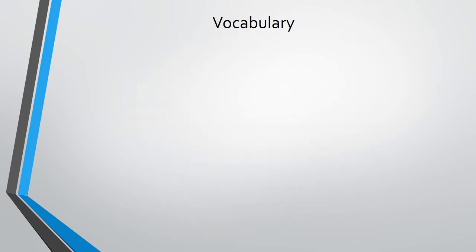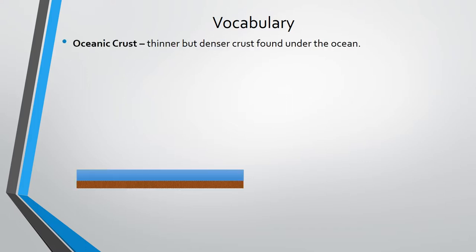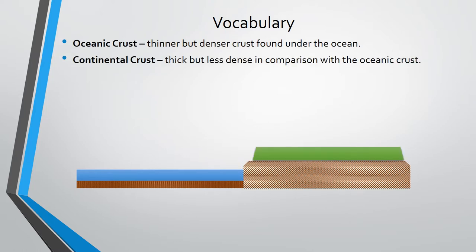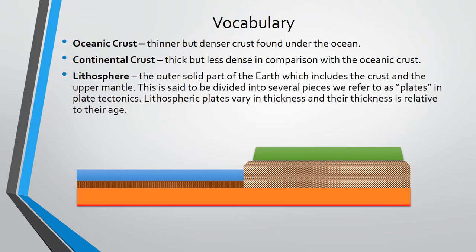Before we proceed to our discussion, let us recall some terminologies that will be mentioned in this video. Oceanic crust: thinner but denser crust found under the ocean. Continental crust: thick but less dense in comparison with the oceanic crust. Lithosphere: the outer solid part of the earth, which includes the crust and the upper mantle. This is said to be divided into several pieces, which we refer to as plates in plate tectonics.